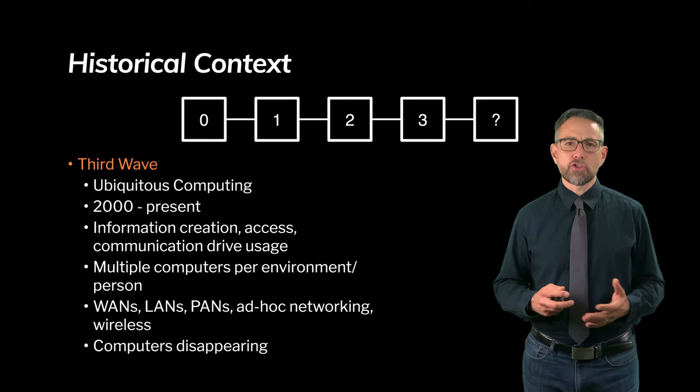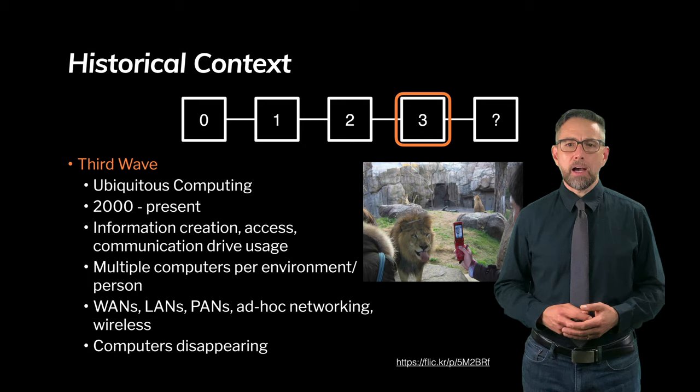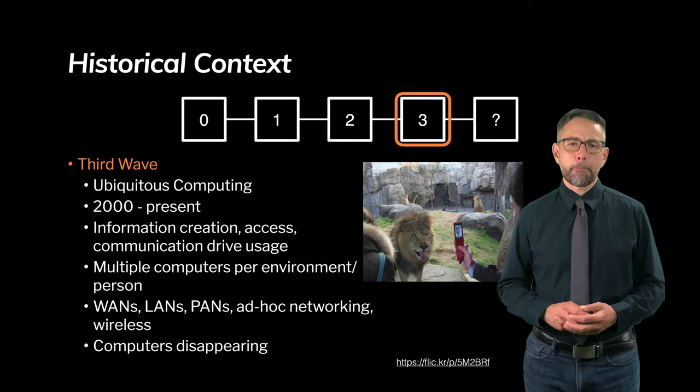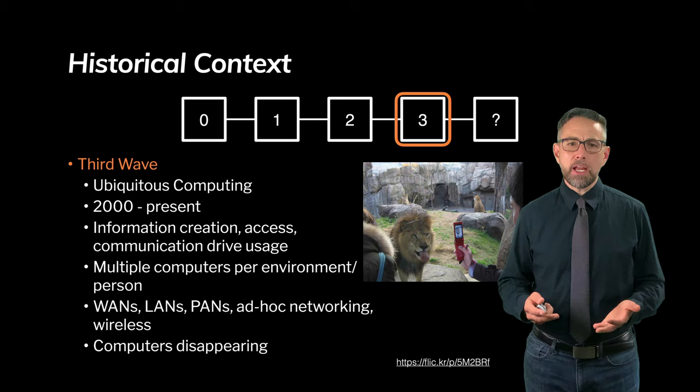So here's an example of third wave computing. This is someone with an early phone taking a picture of a lion, taking it to share it with someone else or maybe just for their own memory, but certainly not driven by a business application trying to get some sort of competitive advantage. In this world though we're starting to think about the relationship between computers changing so that there are multiple computers per environment or multiple computers per person.